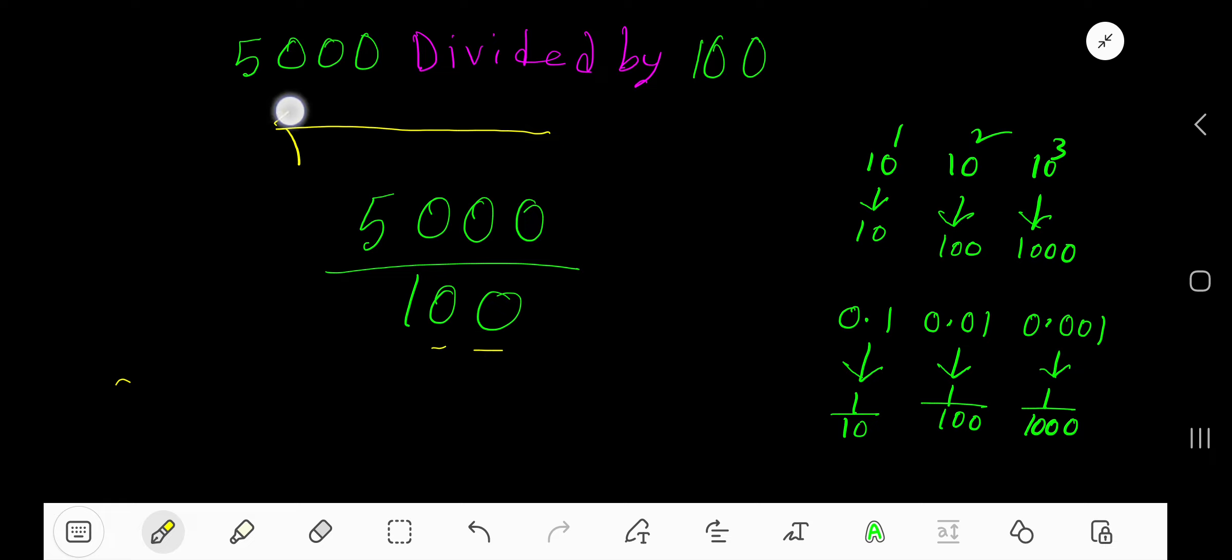Move the decimal point from right to left equal to the number of zeros. Here, the number of zeros is two, so the decimal point will move from right to left two digits. Since this is a whole number, the decimal point will appear here.